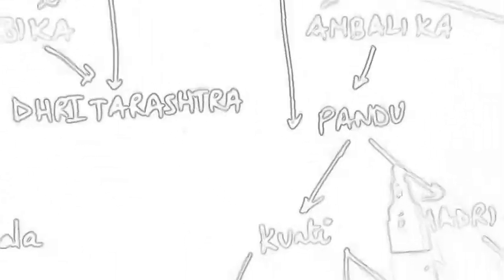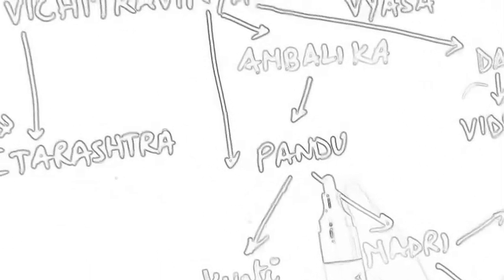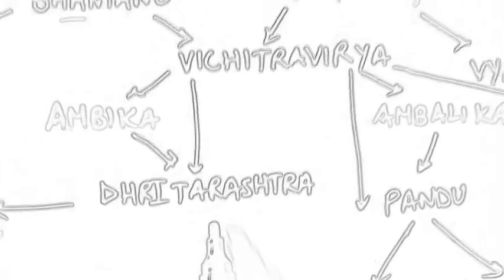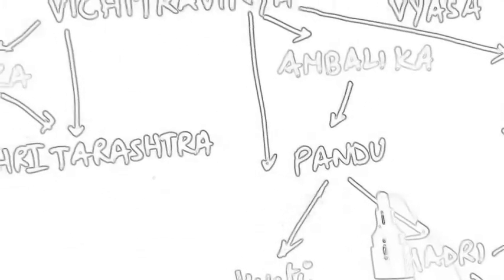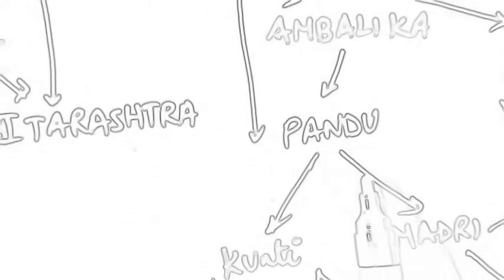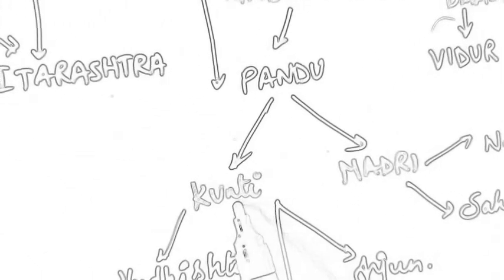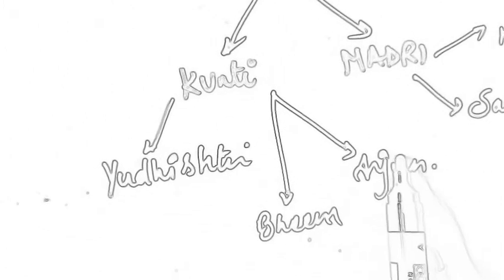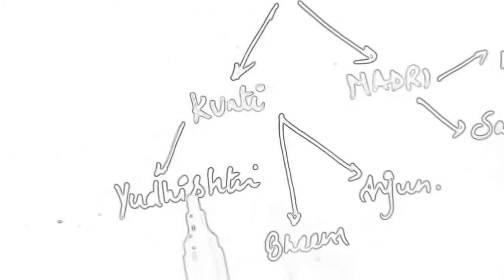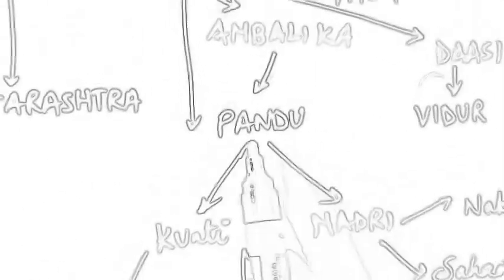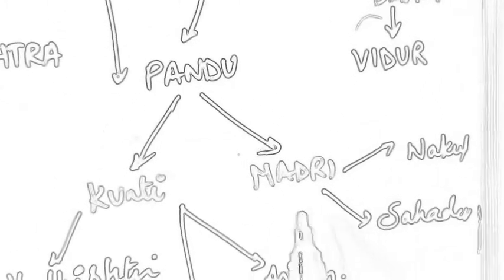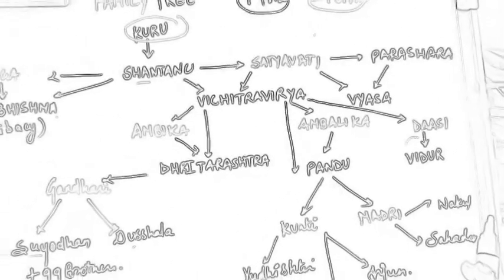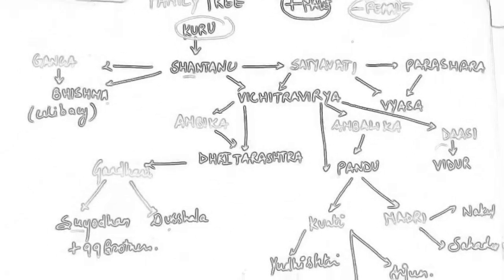Pandu also had two wives. One was Kunti and another was Madri. With Kunti he had three sons — Yudhishthir, Bhim and Arjun, in that birth order. With Madri he also had two sons — Nakul and Sahadev. Since Dhritarashtra was physically undesirable, Pandu was chosen as king even though he was the second son. This is the basic lineage of the dynasty.